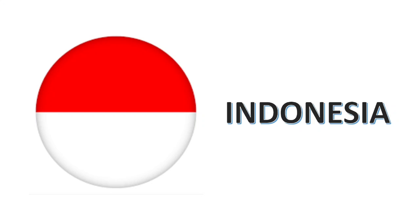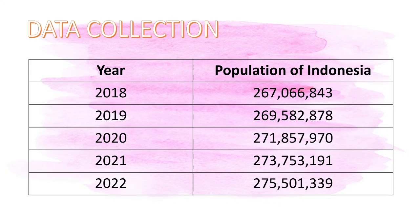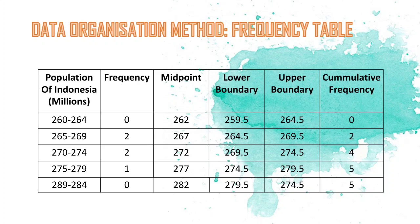Now we talk about the population of Indonesia. The population of Indonesia from 2018 to 2022 is around 267 million to 276 million. For the data organization method, the frequency table includes population of Indonesia in millions, frequency, midpoint, lower boundary, upper boundary, and cumulative frequency. We add two class intervals — one before the first class and one after the last — each with zero frequency.